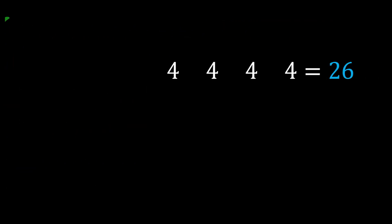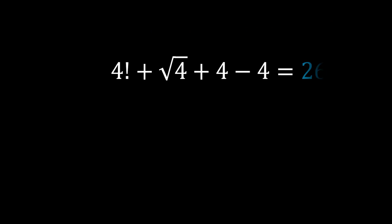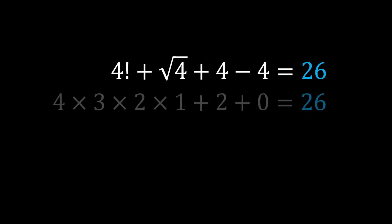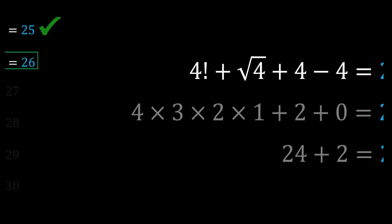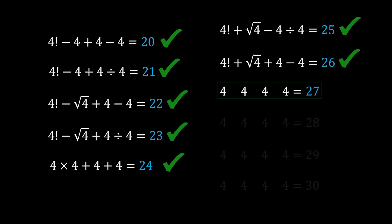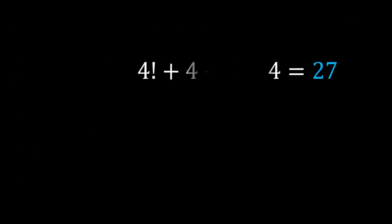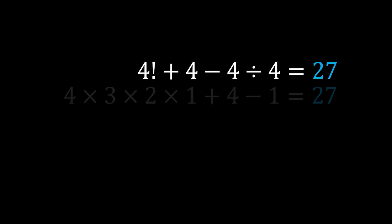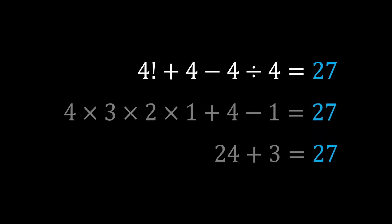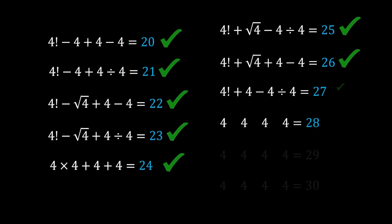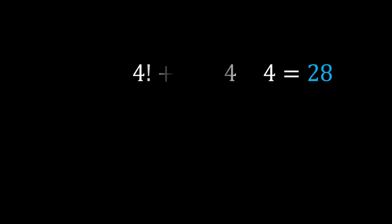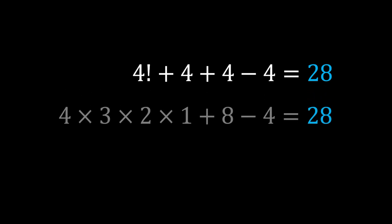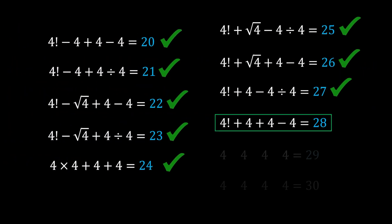Number 26: 4! + √4 + 4 − 4. The +4 and −4 cancel, leaving 24 + 2 = 26. Number 27: 4! + 4 − 4 ÷ 4 = 24 + 3 = 27. Number 28: 4! + 4 + 4 − 4 = 24 + 4 = 28.